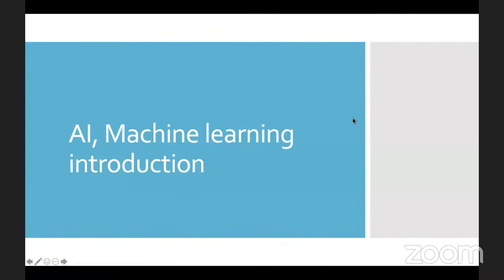We are going to talk briefly about artificial intelligence and machine learning. This will mostly be a theory session, talking about research and how exactly machine learning has been impacting the contemporary world, what has happened in the past, and what is the state of the art. We'll cover historical facts, see what advancements have happened, and what the future of machine learning and artificial intelligence looks like.